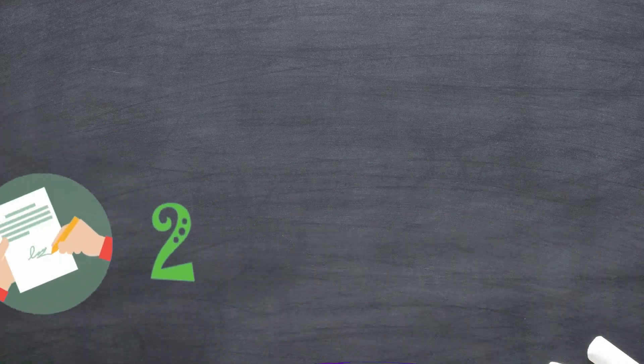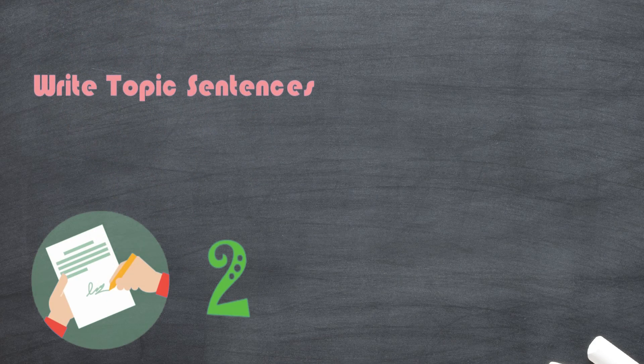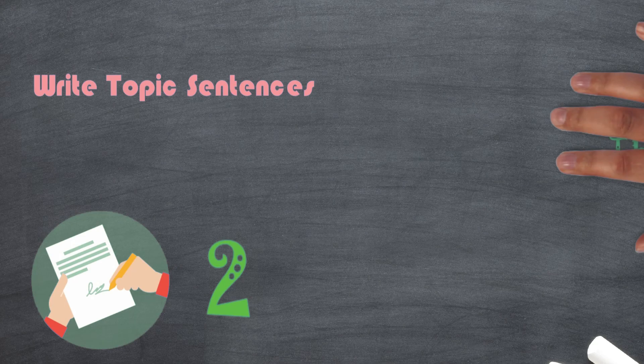In IELTS writing task 2, sometime, no, not sometime, but always, usually is the case that we have to give topic sentences, right? Instead of using there's no doubt or it is hard to deny, you can say...